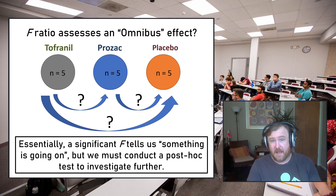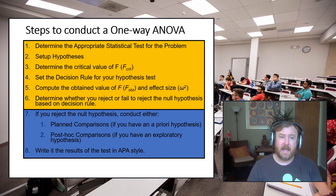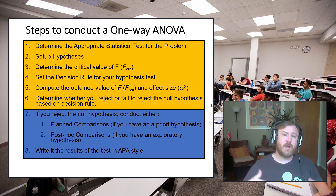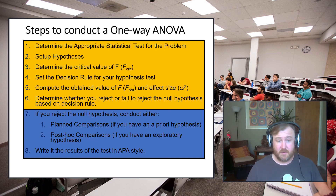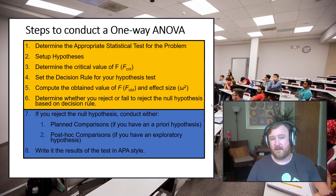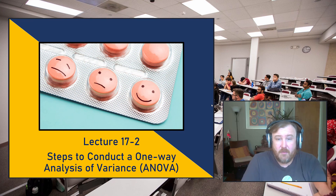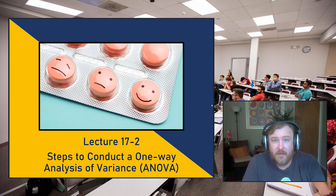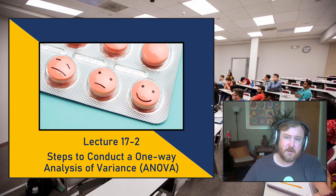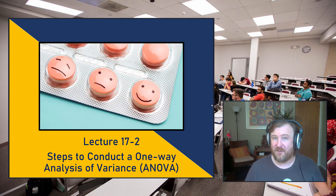If you did not have a significant F it would mean there are no differences — don't bother investigating further. We've now gone through steps one through six. In the next video we'll talk about how to conduct follow-up post hoc or planned comparison tests and how to write up results in APA style format. I hope you found this lecture helpful — if you liked it, don't forget to like it, subscribe, and hit the notification bell. See you soon!